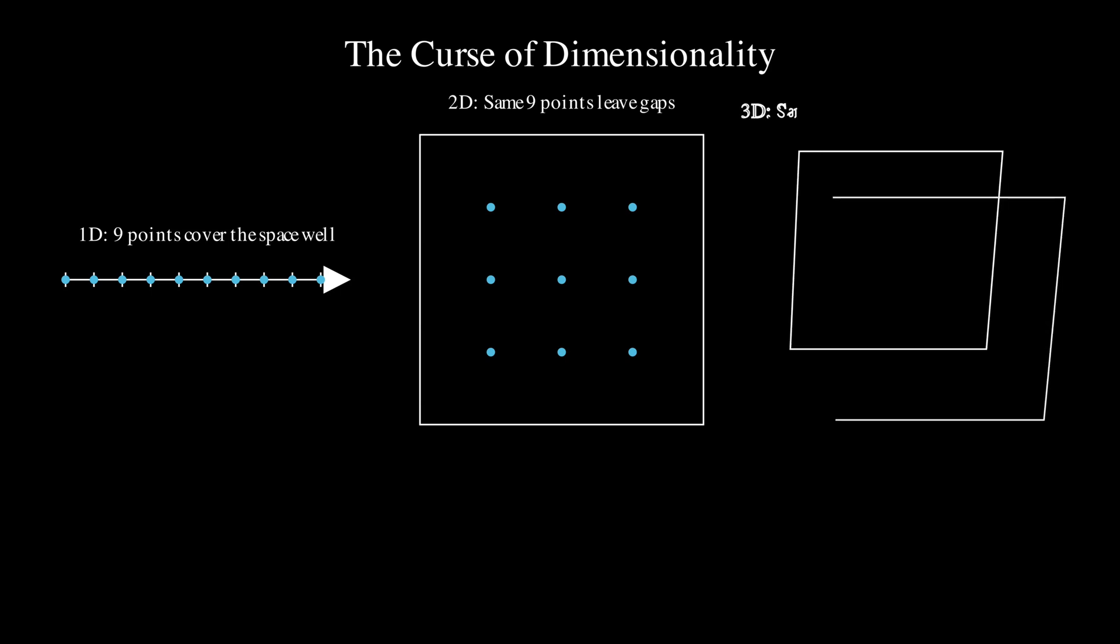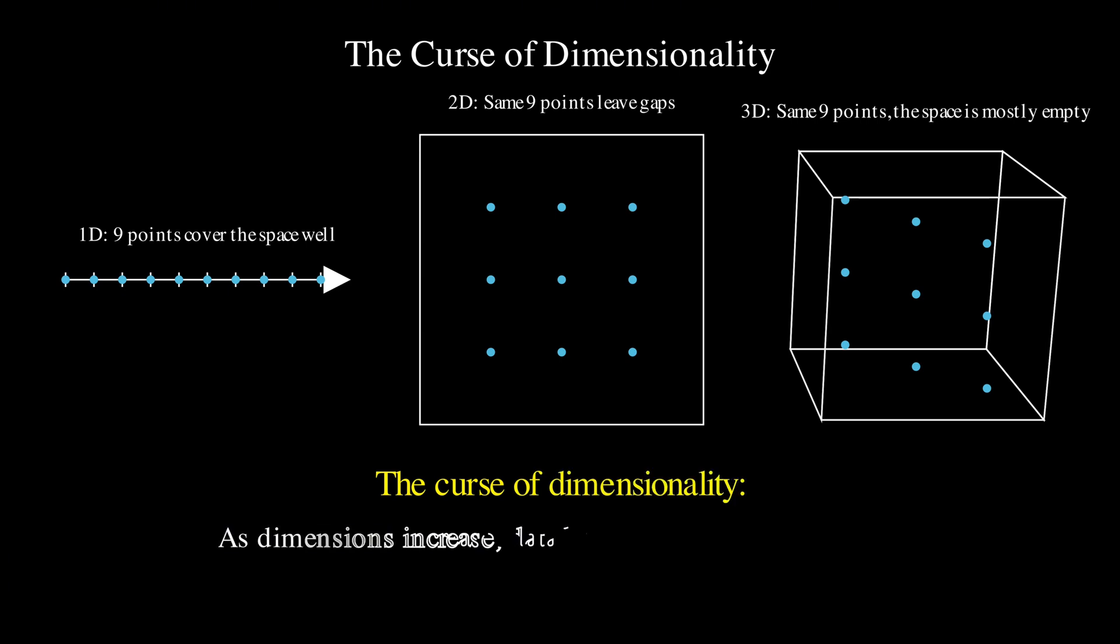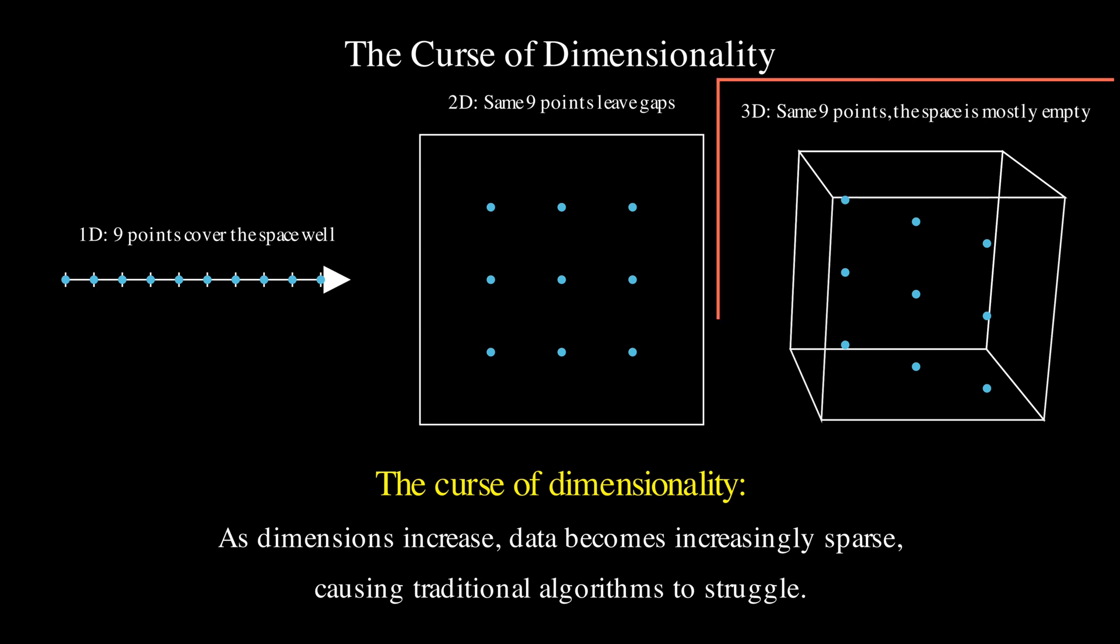And in 3 dimensions, the space becomes mostly empty with just 9 points. And as dimensions increase further, this sparsity becomes even more severe, causing traditional algorithms to struggle with insufficient data coverage.